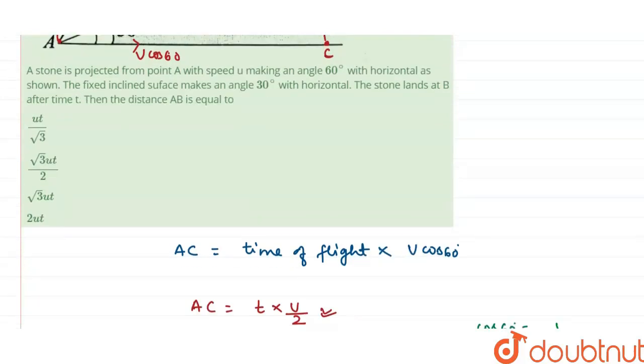This is the distance AB which is equals to ut upon root 3. So let's check the options. The first option which is ut upon root 3 is the correct option. Thank you.